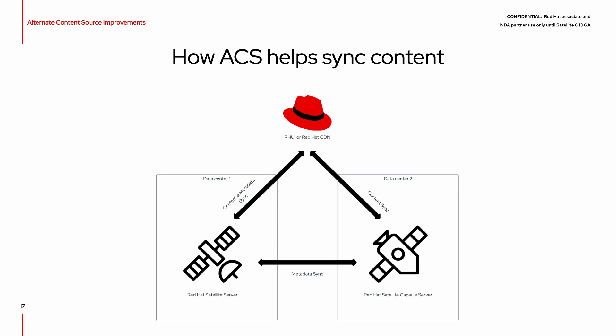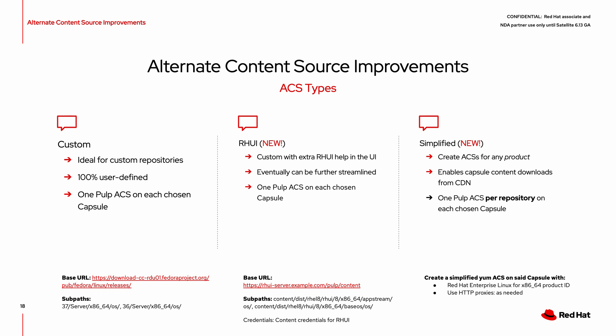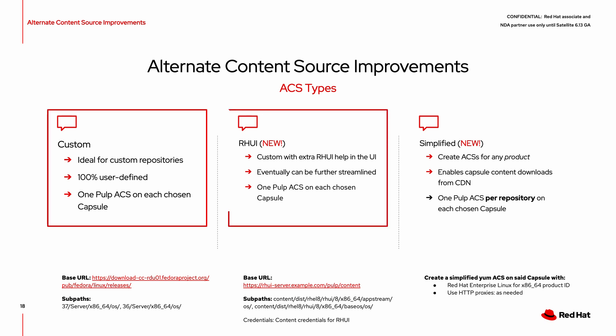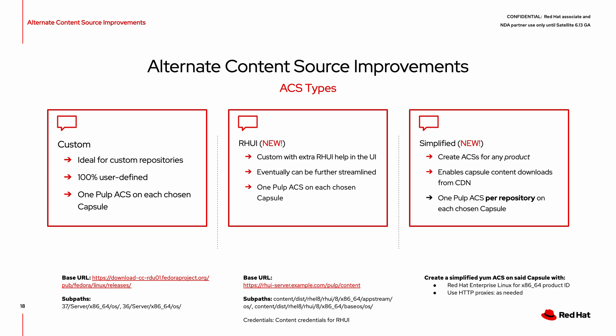In this example, we have a Satellite and Capsule server in different data centers. Both servers can access the Red Hat Update Infrastructure, or Red Hat CDN. Content and metadata are synchronized from the CDN to the Satellite server. Without ACS, we would have to transfer the content and metadata between the Satellite and Capsule server. With ACS, we can save bandwidth — metadata is synchronized between the Satellite and Capsule server, while content is synchronized directly with the Red Hat CDN. The new simplified ACS enables you to create ACSs for any Red Hat product served through the Red Hat Content Delivery Network.